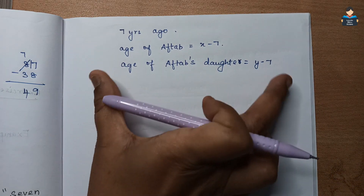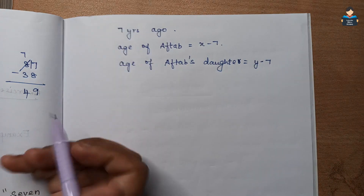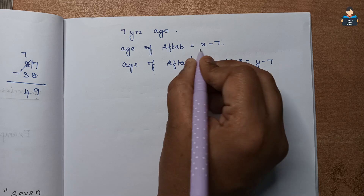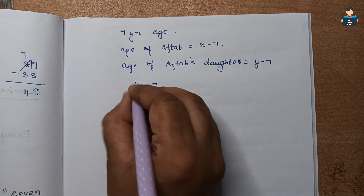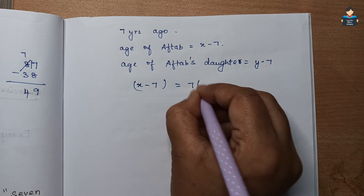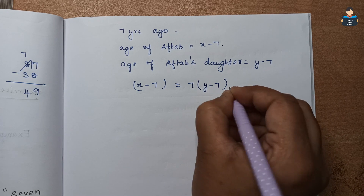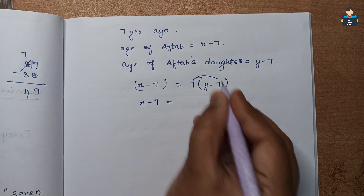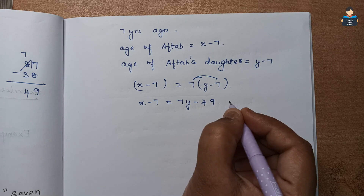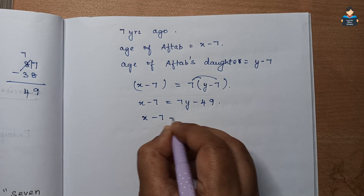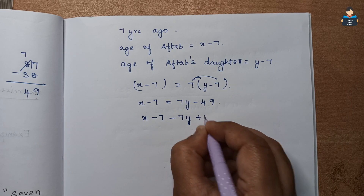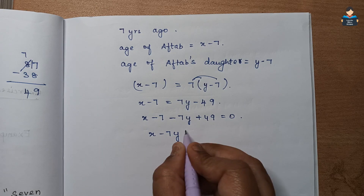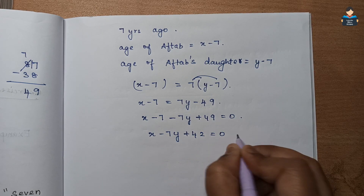From the condition '7 years ago I was 7 times as old as you': x minus 7 equals 7 times (y minus 7). Expanding: x minus 7 equals 7y minus 49. Rearranging: x minus 7y minus 7 plus 49 equals 0, so x minus 7y plus 42 equals 0. This is equation 1.